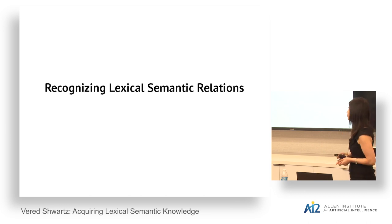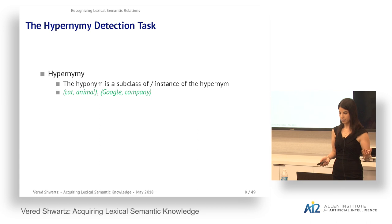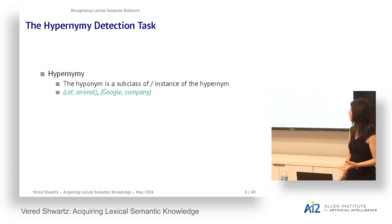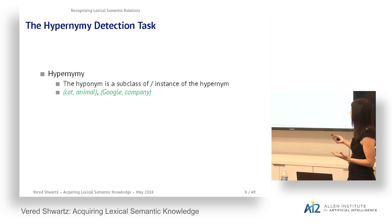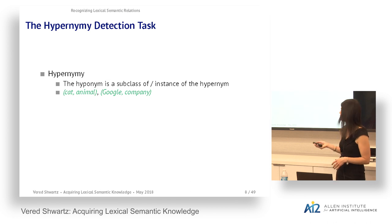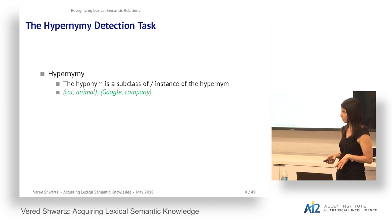Let's start with recognizing lexical semantic relations. We first focused on the hypernymy relation, which is a relation between two words: a more specific word called the hyponym, which is either a subclass of or an instance of the more general word, the hypernym. For example, cat is the hyponym and animal is the hypernym — a subclass relation. Google and company is an instance relation. We treat both variants equally, as most work does.